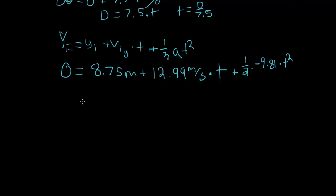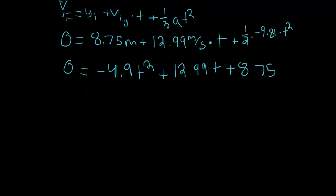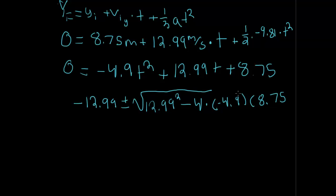So, what we have here is a familiar quadratic equation. We can set it up as such: 0 equals, we're going to simplify the acceleration, put it in a more normal quadratic form. Negative 4.9 T squared, plus 12.99 T, plus 8.75. We'll utilize the quadratic equation here. Negative B, which is negative 12.99, plus or minus the square root of B squared, 12.99 squared, minus 4 times negative 4.9, and times C, which is 8.75, bring this all the way over, and this will all be over 2 times A, which is 2, times negative 4.9.